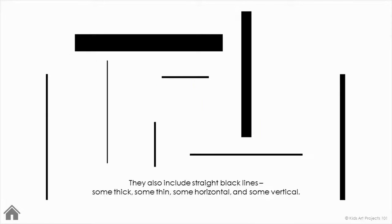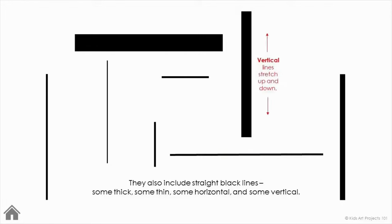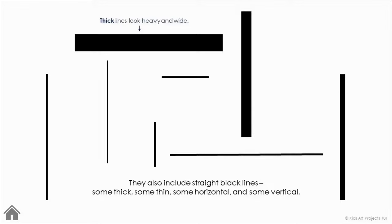They also include straight black lines — some thick, some thin, some horizontal, and some vertical. Horizontal lines stretch side to side. Vertical lines stretch up and down. Thin lines look light and narrow. Thick lines look heavy and wide.